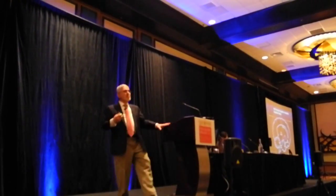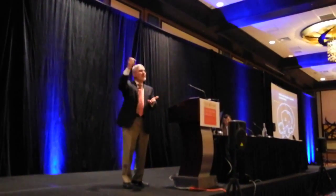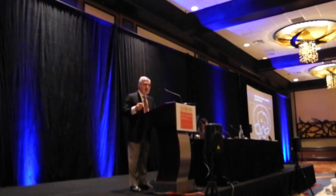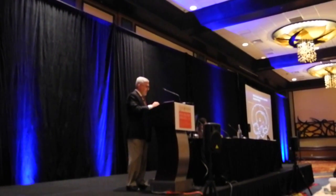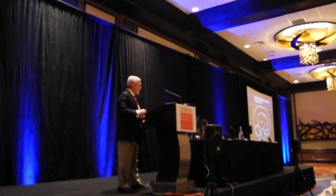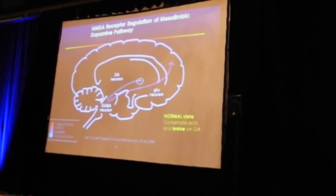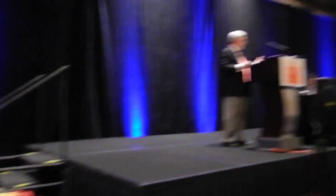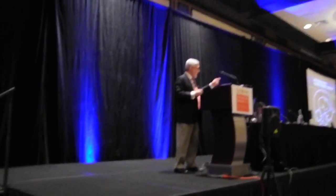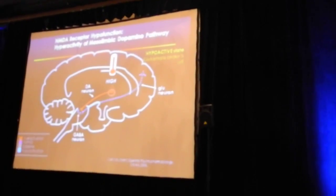If you don't push the brake, there's no inhibition of dopamine, so it goes sky high. That's what happens when glutamate transmission is weak, because the NMDA receptor is not strong enough. Here's basically the normal state: glutamate acts as a brake on dopamine. With hypoactive glutamate, the brake is off, and then we see dopamine go sky high, and delusions and hallucinations result.